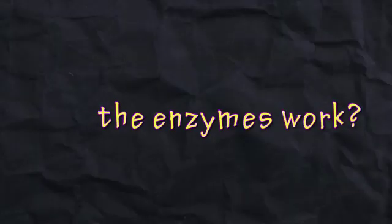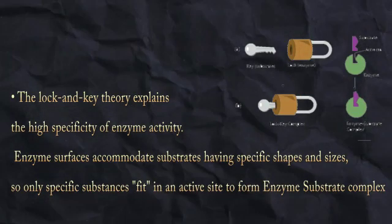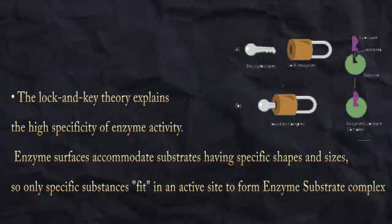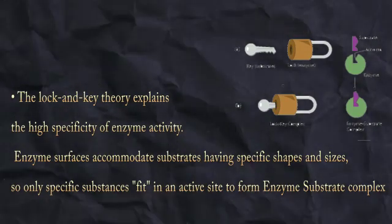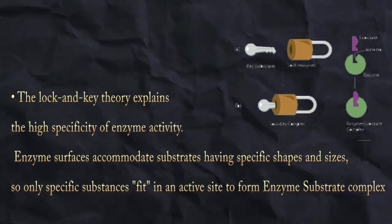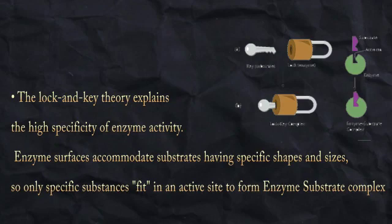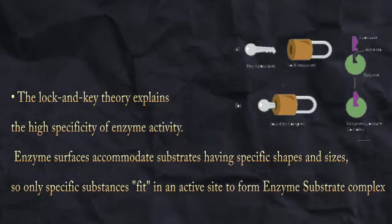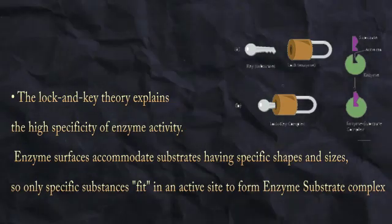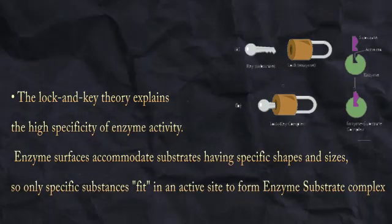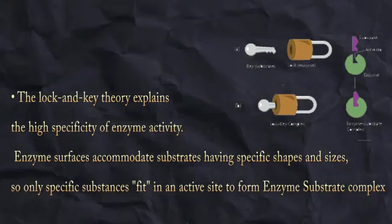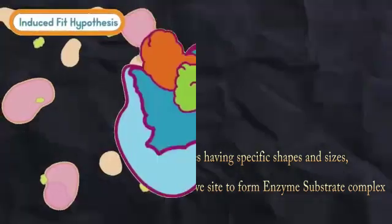How do enzymes work? Lock and Key Theory: The Lock and Key Theory explains the high specificity of enzyme activity. Enzyme surfaces accommodate substrates having specific shapes and sizes, so only specific substances fit in an active site to form an enzyme-substrate complex.